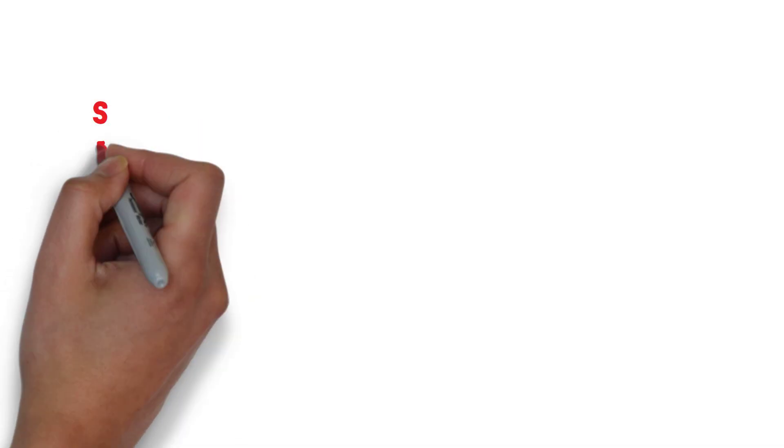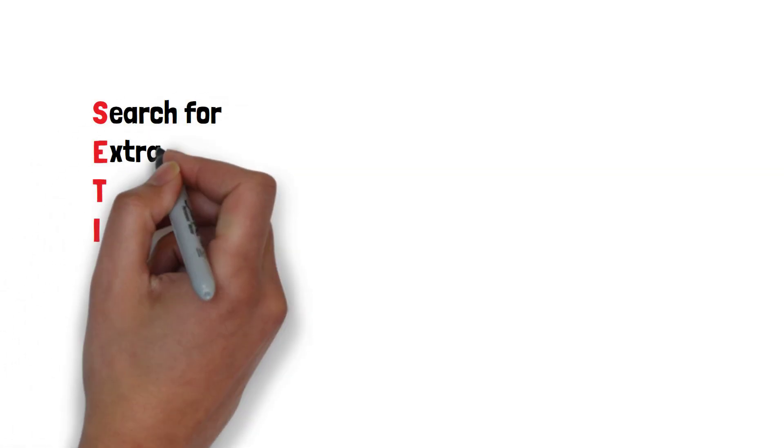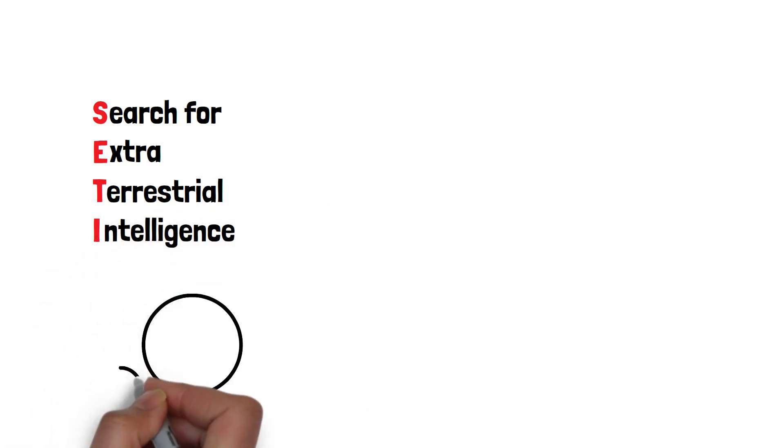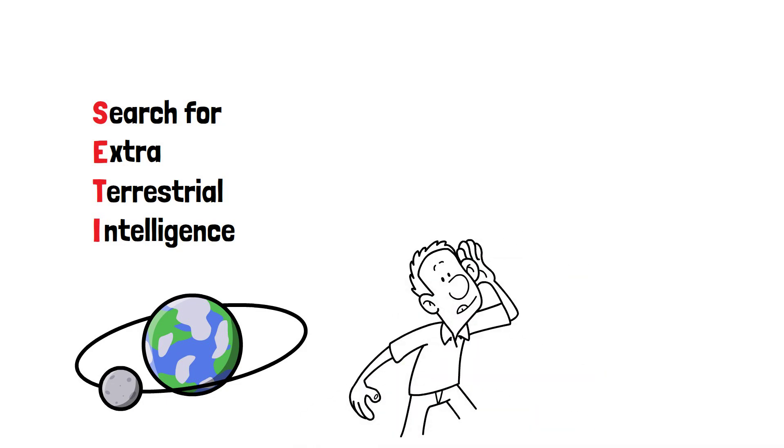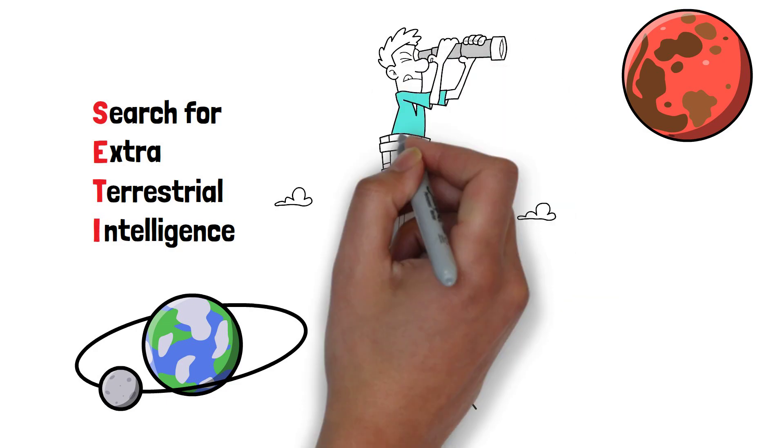First we need to understand what SETI is. SETI stands for the Search for Extraterrestrial Intelligence. It's a scientific endeavour dedicated to seeking evidence of intelligent life beyond Earth. Scientists involved in SETI use various methods such as listening for signals from space or studying celestial objects to detect signs of extraterrestrial civilisations.